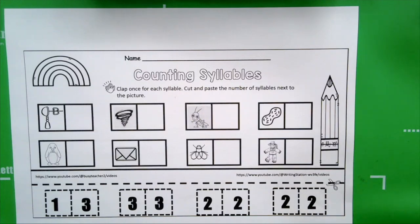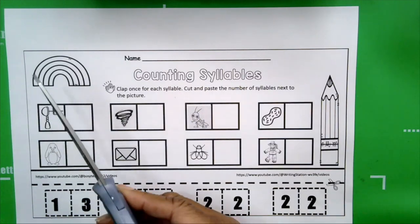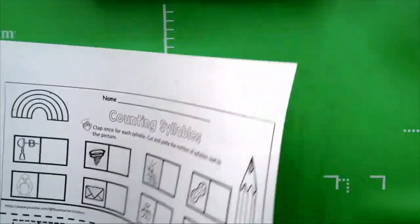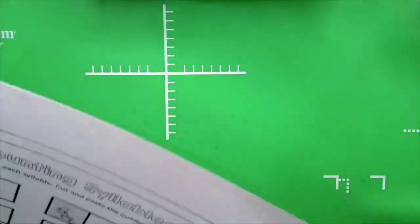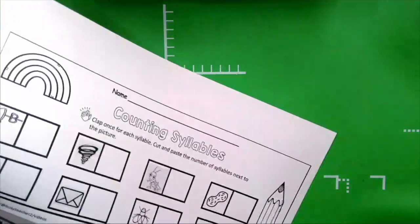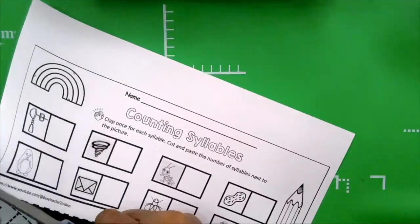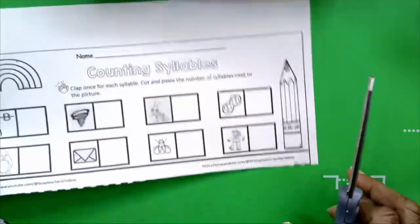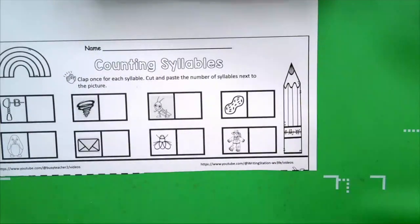Okay, first thing we're going to do, you need your scissors. We're going to cut out our numbers. Boys and girls, we're going to cut out all the numbers so that we will be nice and organized. We'll have all our numbers in front of us.